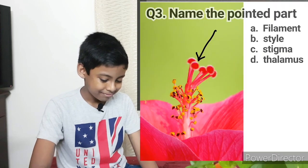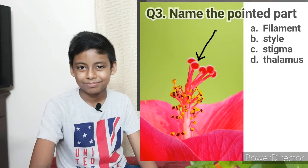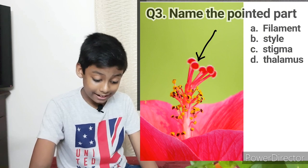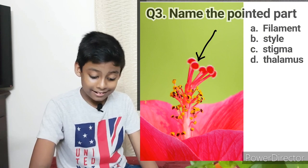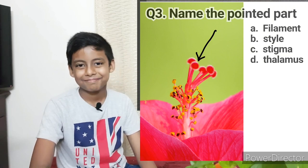The next question is: Name the pointed part. Options: Filament, Style, Stigma, Calamus. The answer is Stigma.